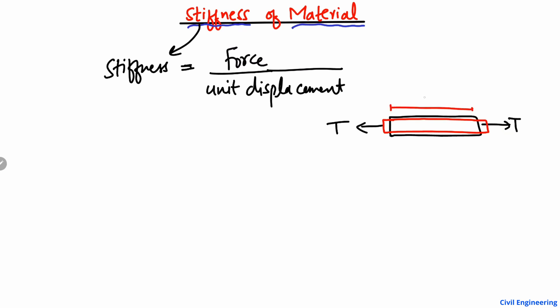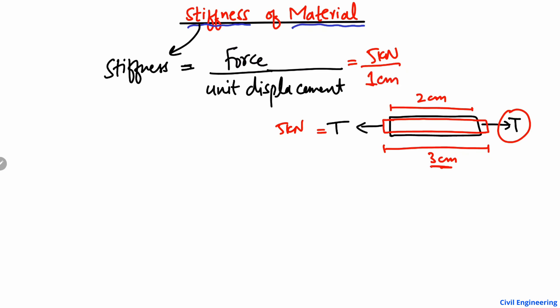You increase the dimension of this rod by one centimeter. For example, before the load the length was two centimeters, but now the length of this rod is three centimeters. So you have produced a unit displacement of one centimeter in this rod under the applied tension load. For example, this load may be 5 kilonewtons to produce this unit displacement. Dividing these two: force divided by unit displacement equals 5 kilonewtons per centimeter — this is known as the stiffness of this material.